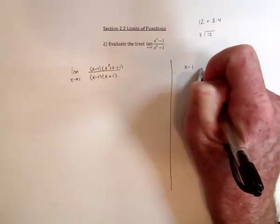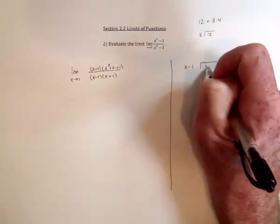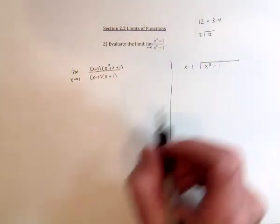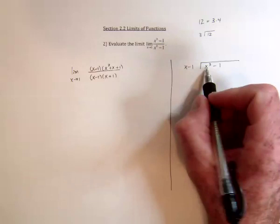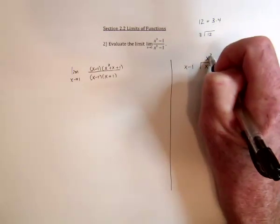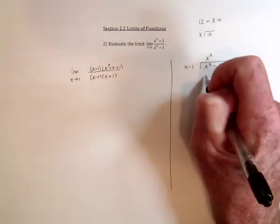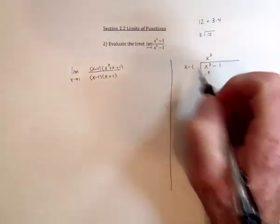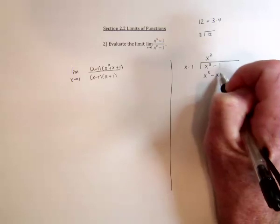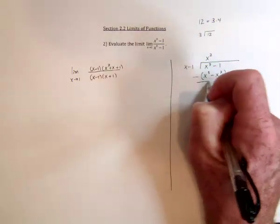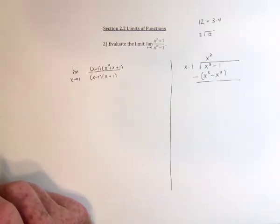So x minus 1 gets divided into x cubed minus 1. So an x dividing into an x cubed will go x squared times and then distribute. So it's going to be x cubed, and then this times this will be minus x squared. And then subtract that line. And what's left over is an x squared positive and carry down a negative 1.